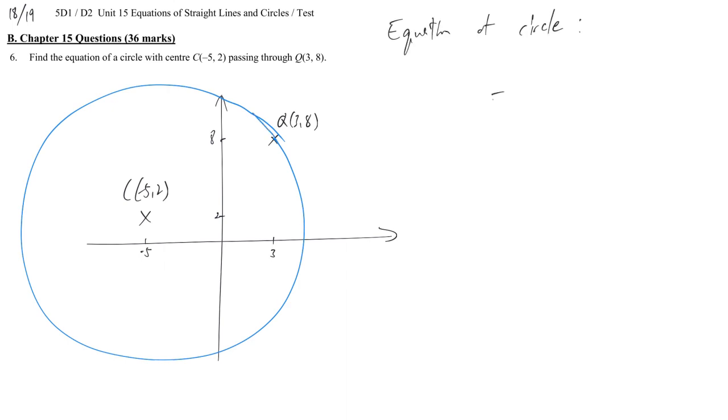For the equation of a circle, which is the same, any point, a general point (x, y), the distance between a general point to the center should equal to the radius.